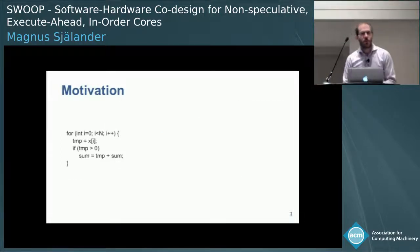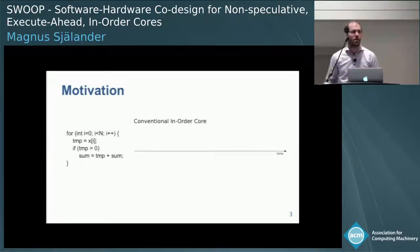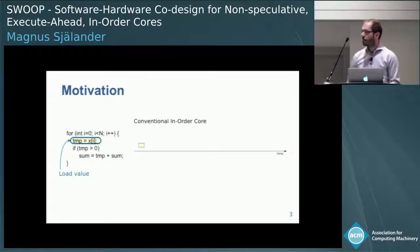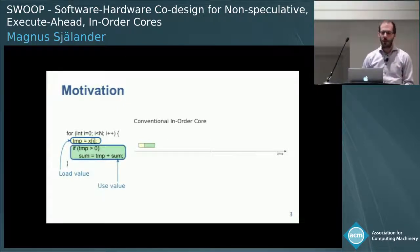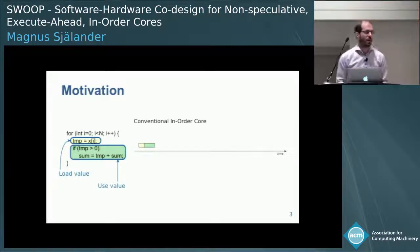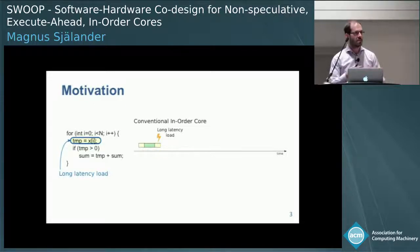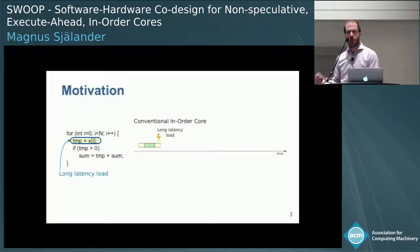Let's look at an example. We have a loop that's summing up positive numbers, and let's see how we would execute this on a normal in-order core. In the first iteration, we load a value — we see that by the square on the timeline — and then after that, we use this value to do the summation. In the second iteration, assume that this load misses in the cache hierarchy, so we need to go all the way to main memory to fetch the data. This takes 100 or more cycles.